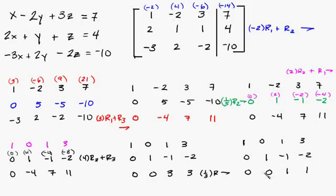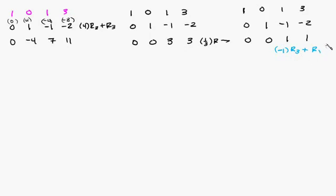What we could do is multiply row 3 times negative 1 and add it to row 1. Strategically, I'm doing that because I've got 0's here and they won't affect these numbers. So: negative 1 times 0 is 0, again 0, this becomes negative 1, and this becomes negative 1. Then add row 3 plus row 1: 0 and 1 is 1, 0, negative 1 plus 1 is 0, and negative 1 plus 3 is 2. And then we just copy everything else down: 0, 1, negative 1, negative 2.